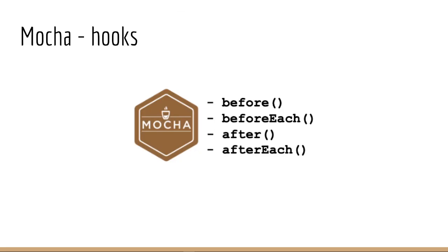Hooks in Mocha are functions that run before or after tests. They can be used to set up test data, create test environments, or tear down resources after the tests have run. Mocha provides four types of hooks: before, before each, after, and after each.